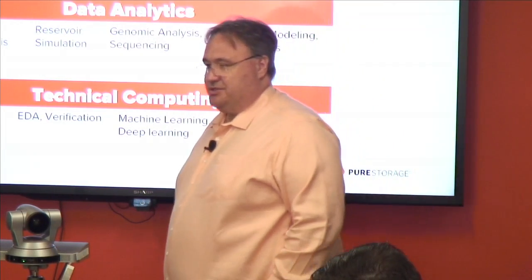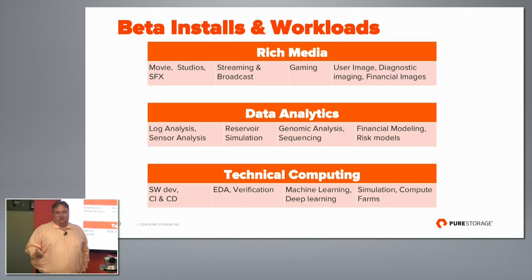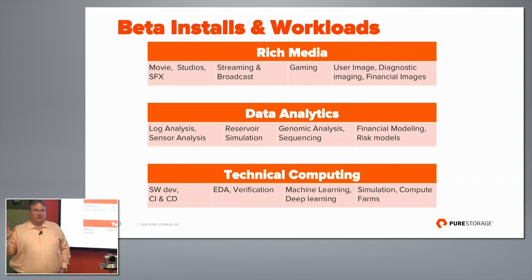Since you heard about this system, we've been busy installing. We've been installing into a couple of industries, and I want to summarize them into three categories: rich media, data analytics, and technical computing. Within rich media you have movies, studios, and special effects houses. Imagine you're shooting a heavily animated movie like Avatar — these productions are heavily dependent on computing infrastructure and underlying storage to create that content. This is becoming everywhere: animation, children's broadcasting, real-time special effects for sports, universities, and regular studio broadcasting.